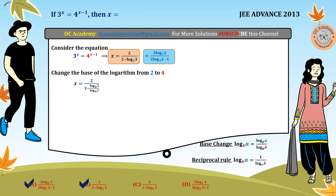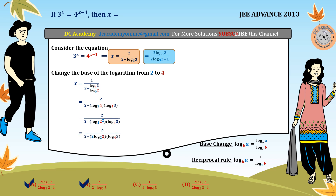We recall the reciprocal rule again: log base b of a equals 1 divided by log base a of b. So log base 4 of 2 in the denominator can be rewritten accordingly. Since 4 equals 2 squared, we apply the power law, giving 2·log base 2 of 2, which equals 2. After simplification, the 2s cancel throughout, yielding x equals 1 divided by log base 4 of 3.